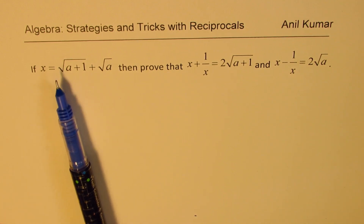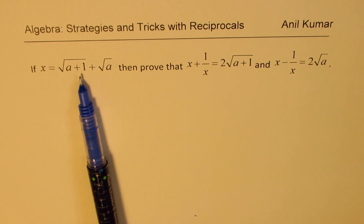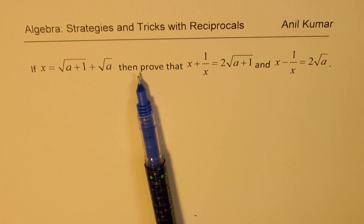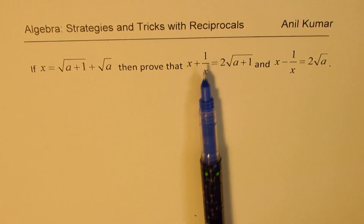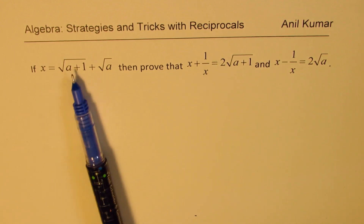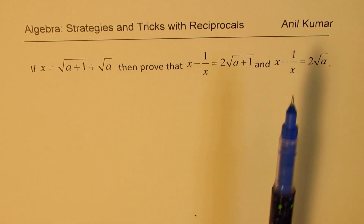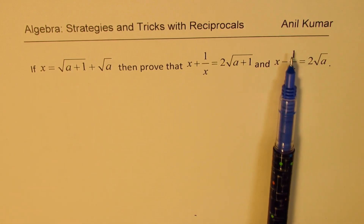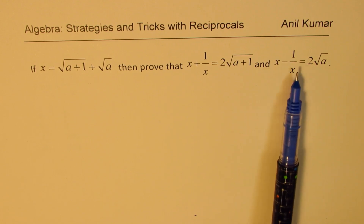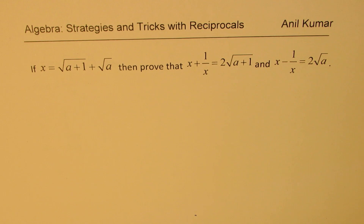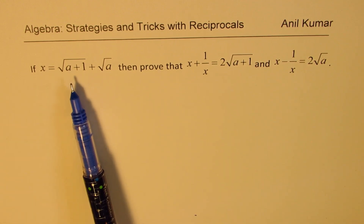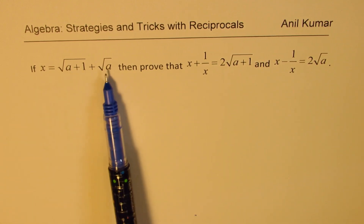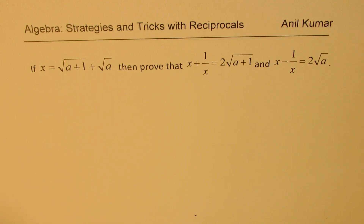We are given x is equal to square root of (a+1) plus square root of a. Then we can prove that x plus its reciprocal 1 over x is equal to 2 times the first term. If we want to find x minus 1 over x, that will be twice the second term. It is very important to understand that the formula we are deriving here is based on the fact that within the square root the first number is 1 more than the second.